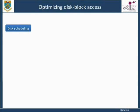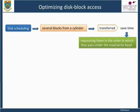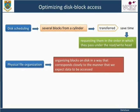Disk scheduling: if several blocks from a cylinder need to be transferred, we may save time by requesting them in the order in which they pass under the read or write head. Physical file organization is concerned with organizing blocks on disk in a way that corresponds closely to the manner in which we expect data to be accessed. We will see the advantages and disadvantages of various file structures in achieving this goal.